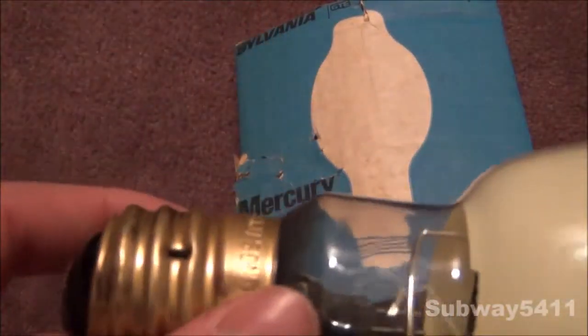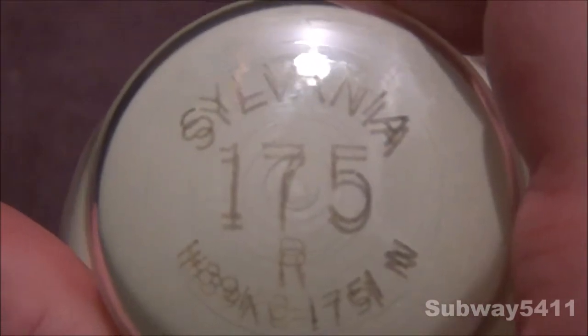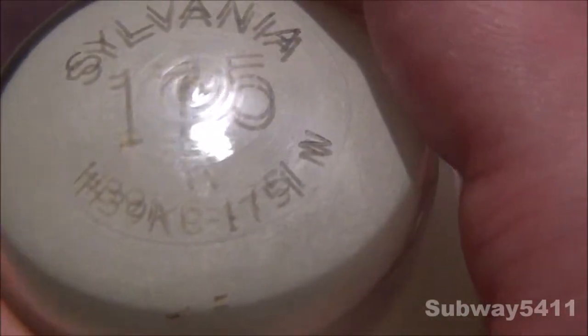Let's take a look at the bulb itself. As you can see, it has a very nice brass base. It also has a very nice etch on the top. It says Sylvania, 175 watt, RH39KC-175, slash N. I've never really seen that before.